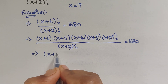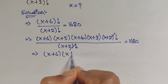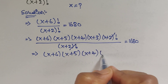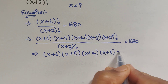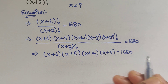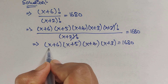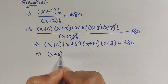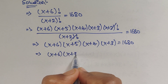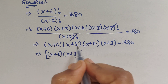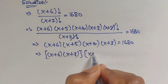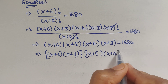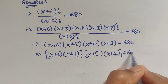After cancellation we get (x+6)(x+5)(x+4)(x+3) = 1680. Now we multiply the first and last terms together, so (x+6)(x+3), and multiply the middle two terms, (x+5)(x+4), and that product equals 1680.